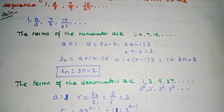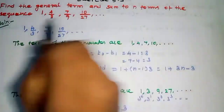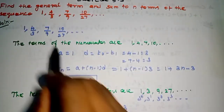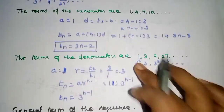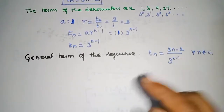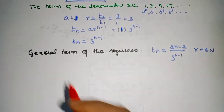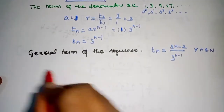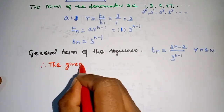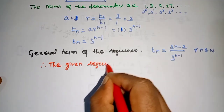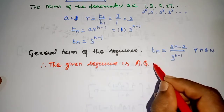For the second concept — sum to n terms of the sequence. Since the sequence satisfies both AP and GP conditions simultaneously (the numerator is AP and denominator is GP), this is called an Arithmetico-Geometric Sequence (AGP).